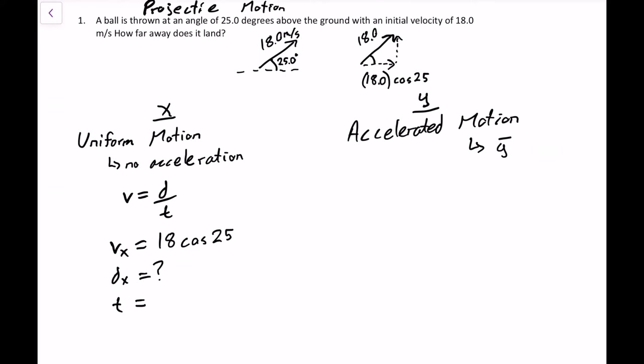So the vertical component of this velocity is going to be 18 sine of 25. And so we'll call that VI because it's the initial velocity, and it's the initial velocity in the Y direction. And that's going to be 18 sine 25, which if you work that out gives you 7.60713 meters per second. We want to make sure we're keeping all of our decimals so that we don't run into any issues with rounding later on. Notice over here on the X side, we don't have a VI and a VF because there's no acceleration. So VI and VF are the same.